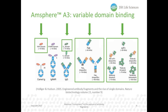On this next slide, we have an overview of the variable domain binding of ANSphere A3. Besides the use for Fc-containing antibodies and constructs, ANSphere A3 can be used for purification of VHH single domain antibodies and VH3 antibodies or constructs like the Fabs shown here, and a range of fusion proteins like single-chain variable fragments shown on the right.